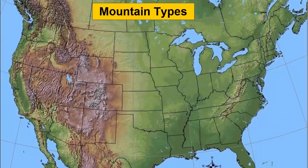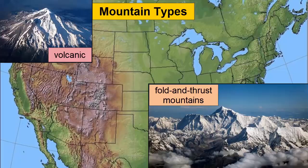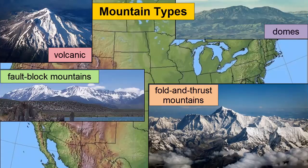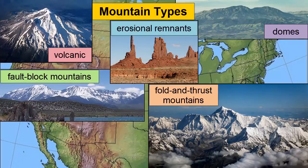In summary, any landform that sits higher than its surroundings — which we call a mountain — can be classified as either volcanic, compressional fold and thrust mountains, tensional fault block mountains, domes, or erosional remnants. The variety of shapes they display comes from a combination of the forces that push the land up, the erosional forces that sculpt it down, and the hardness of the rock within the mountains. Combined, these create the variety of mountains we see across our planet.